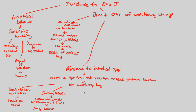But what do we notice in the central Florida population? There's actually a population of soapberry bugs in central Florida, and the environment is different — the resources are different. In central Florida, there are no balloon vine seeds. There are golden rain tree seeds, and these are found within flatter fruits.